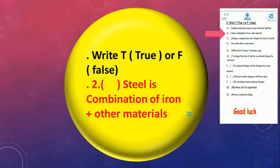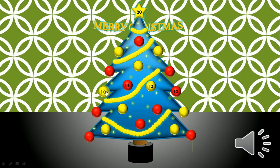Number 9: Steel is a combination of iron plus other materials, true or false? True, good job.